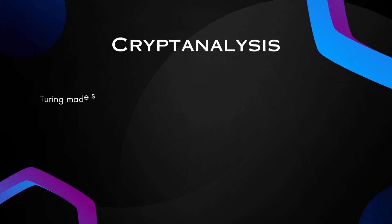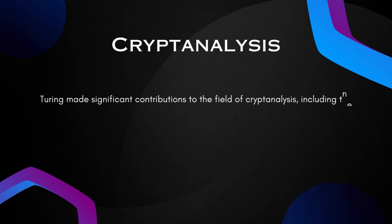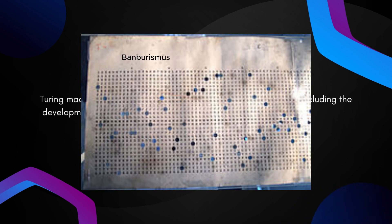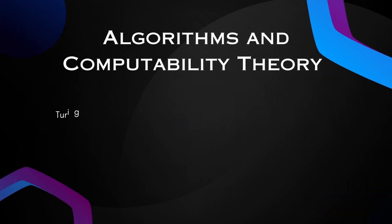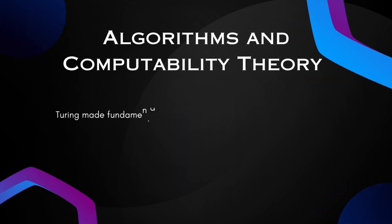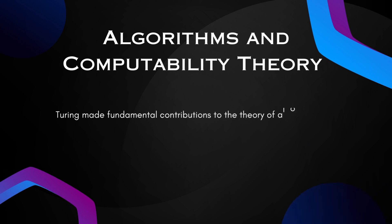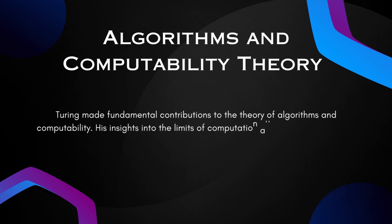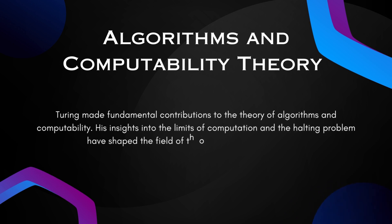Cryptanalysis: Turing made significant contributions to the field of cryptanalysis, including the development of techniques to break complex ciphers and the invention of the Banburismus method for deciphering German messages. He also made fundamental contributions to the theory of algorithms and computability. His insights into the limits of computation and the halting problem have shaped the field of theoretical computer science.